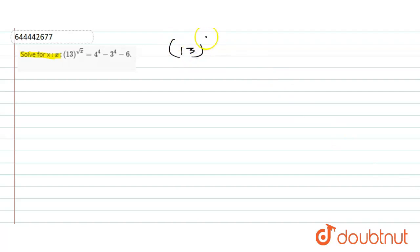The question is: 13 raised to power under root of x equals 4 raised to power 4 minus 3 raised to power 4 minus 6. So I need to simplify the powers first of all. That is 13 raised to power under root of x equals...